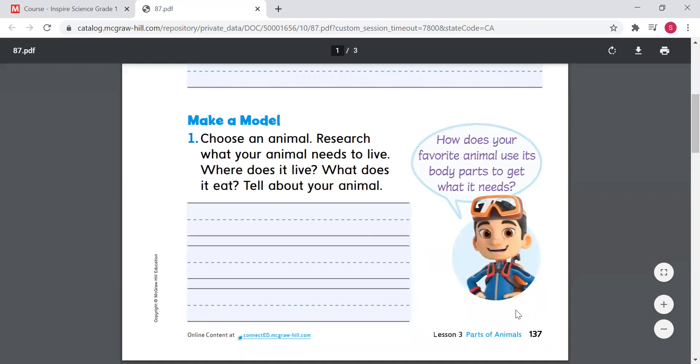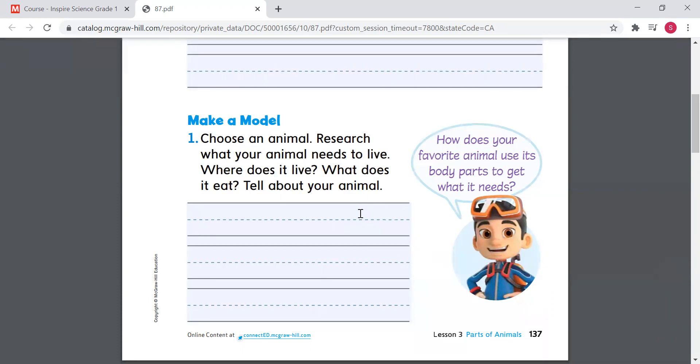For number one, we're still on page 137. Make a model. So choose an animal. Research what your animal needs to live. Where does it live? What does it eat? Tell about your animal. So over here you're gonna choose your favorite animal or an animal that you like to do some research about using Google with the help and assistance of an adult, or if you have any books talking about certain animals.